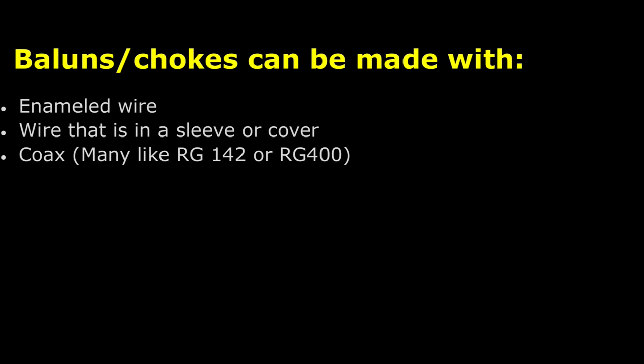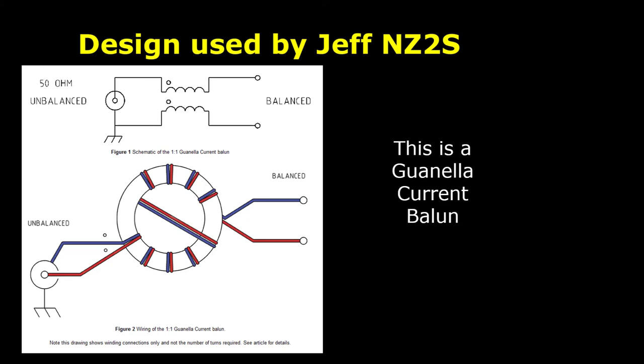Baluns and chokes can be made with enameled wire as Jeff demonstrated in this video. It can also be made with wire that is covered with a sleeve or with coax, and many people like RG-142 or RG-400 that are both small coaxes. The design used in this particular how-to comes from the ARRL Antenna Handbook. It's called a Guanella current balun and this is exactly the one that Jeff demonstrated. The ARRL handbook has many many ideas on different ways you can construct them, and so we encourage you to look at that.